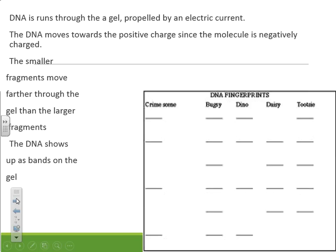To recap: DNA runs through the gel propelled by an electrical current. DNA is negatively charged, so it moves towards the positive end. Smaller fragments move farther and faster; larger fragments move slower and don't go as far through the gel. That is a recap of DNA and gel electrophoresis.